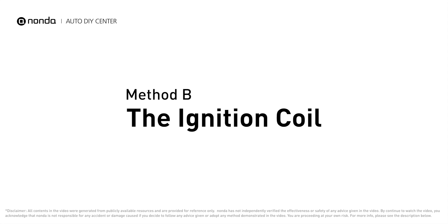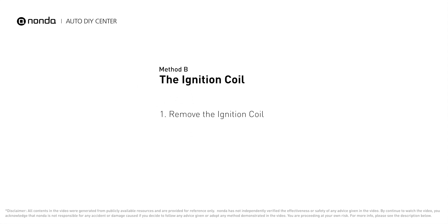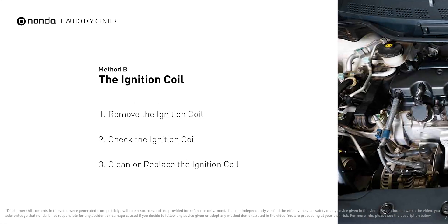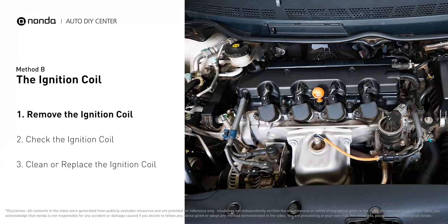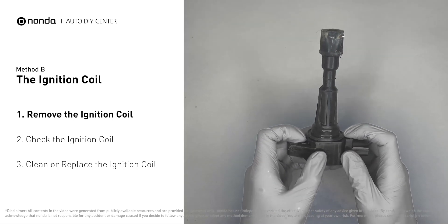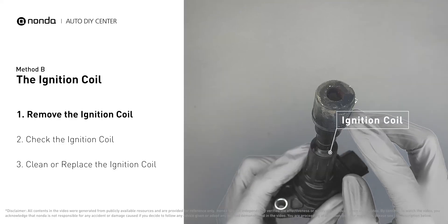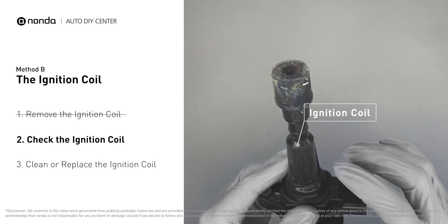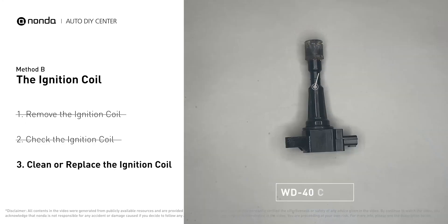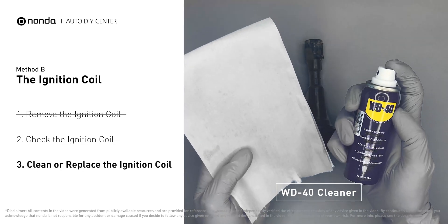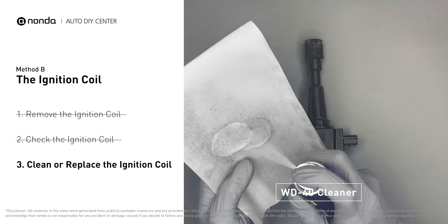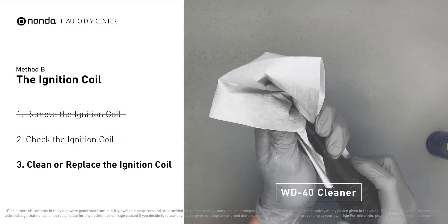Method B: the ignition coil. Ignition coils are usually installed directly at the cylinder head above the spark plug. First, carefully remove the ignition coil from the engine. Check to see if the ignition coil is either stained or damaged. If the ignition coil is covered with engine oil or stains, simply clean it with a WD-40 cleaner.